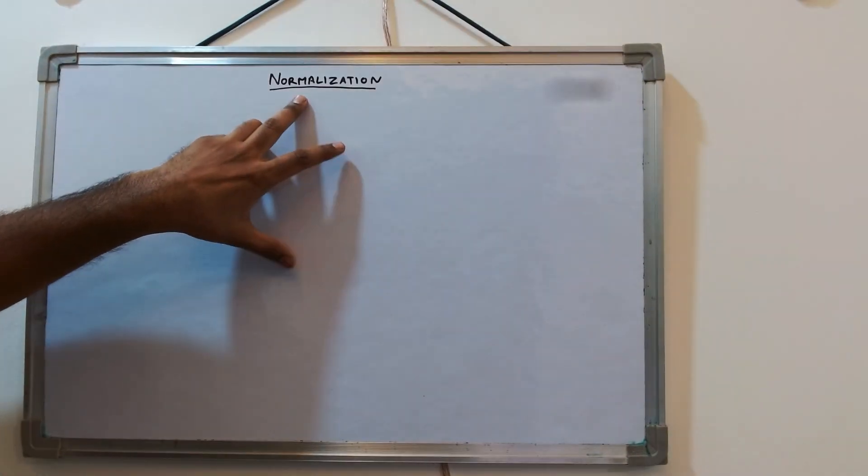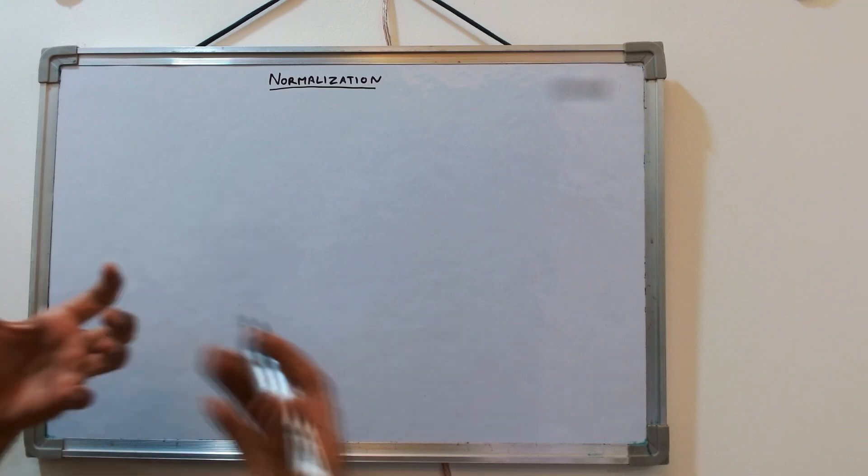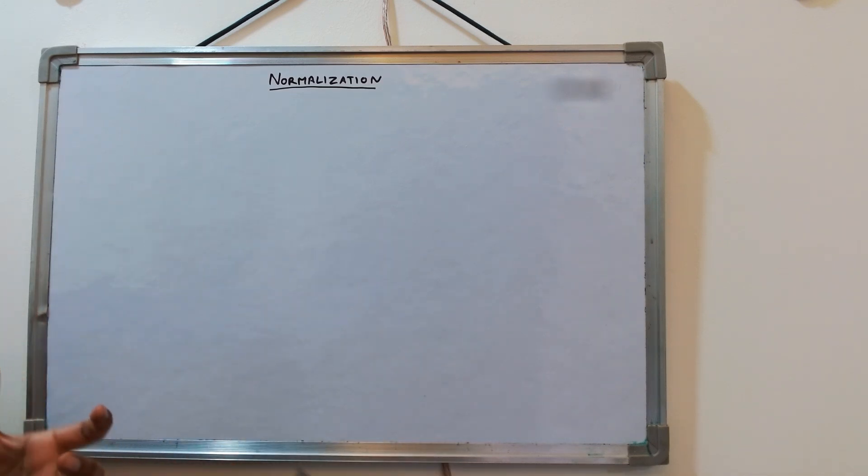So what does normalization mean? Normalization means dividing the table into different tables or smaller tables such that we can reduce the insertion, updation, and deletion anomalies.